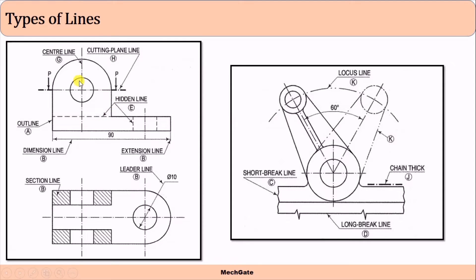Whenever there is a circle, there will be a center line. The center line is generally represented using a long line, short line, long line, short line pattern. Similarly, this is the vertical center line, also known as the line of symmetry. If a certain object is symmetric about a certain axis, we can use this center line to represent the line of symmetry.